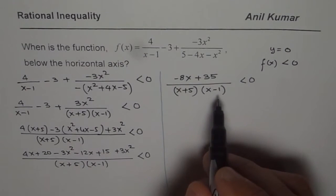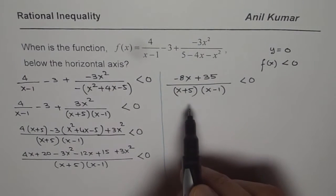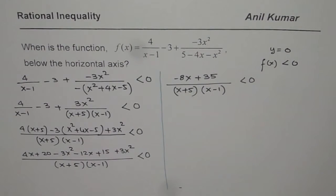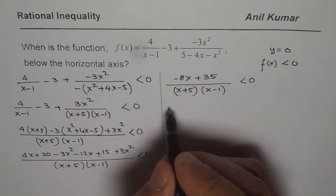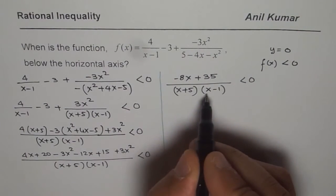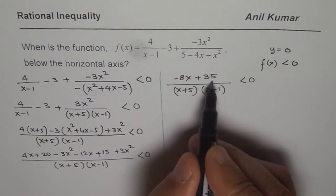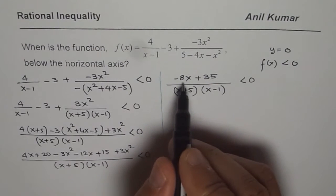Now to solve this inequality, we need to find the zeros of the numerator and the zeros for the denominator. And then we will analyze the terms. So what we have here is the vertical asymptotes or the zeros of the denominator are at x equals minus 5 and x equals 1. As far as the numerator is concerned, the zeros of the numerator are at 35 over 8.